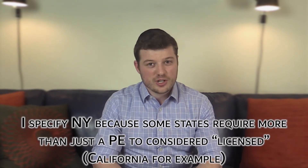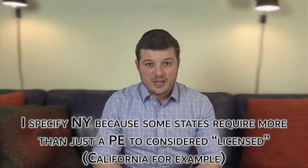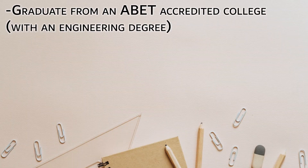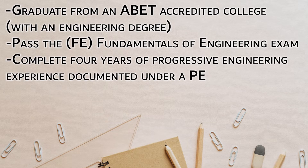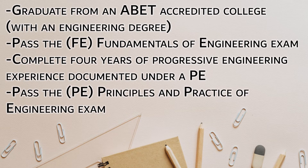So what does it mean to practice structural engineering without a license? To be an official structural engineer in New York City, you need to have your PE, or your professional engineering license. The way you get your PE in New York City is you graduate from an ABET accredited college, take your FE, have post-graduation work of four years documented, and finally pass the PE exam.